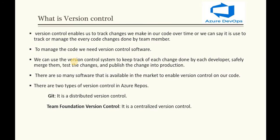We can use a version control system to keep track of each change done by each developer, safely merge them, test the changes, and publish them to production. If we don't have version control, developers would directly push code to production, which can damage the production code and risk the website going down. With version control, changes are pushed into the repository, tested, and only then published to production.